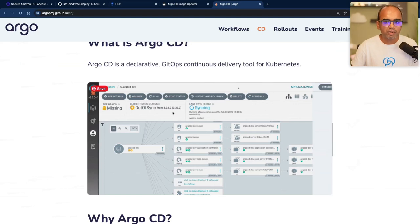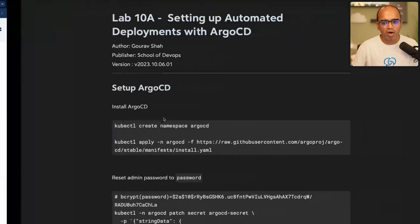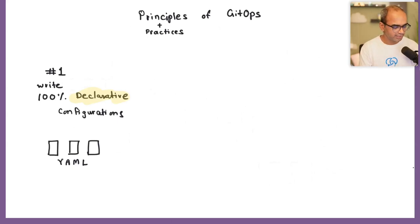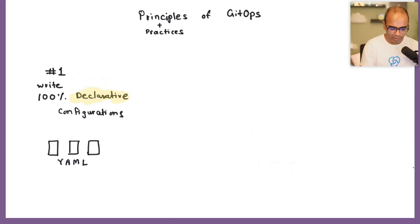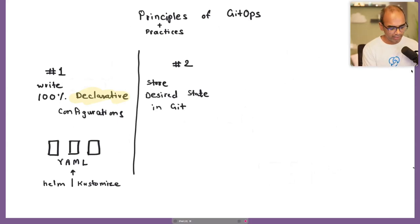To understand Argo CD you need to understand the four principles of GitOps. The first principle is: write everything as code - 100% declarative configurations. With Kubernetes you write everything as YAML manifests, everything is an API resource, and everything can be automated. The second principle is revision controlling that code in Git.